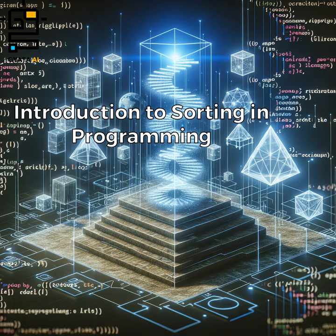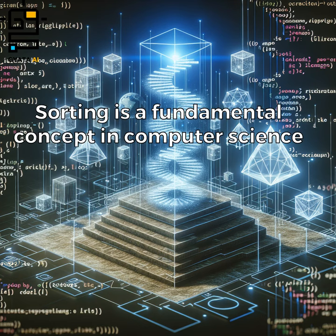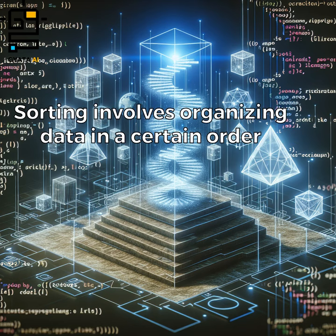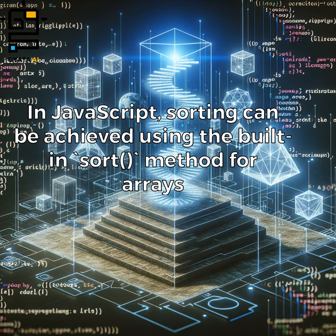Introduction to sorting in programming. Sorting is a fundamental concept in computer science — it involves organizing data in a certain order. In JavaScript, sorting can be achieved using the built-in sort method for arrays.